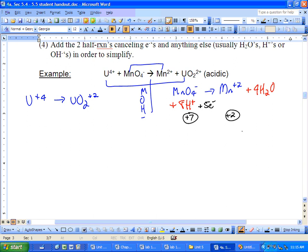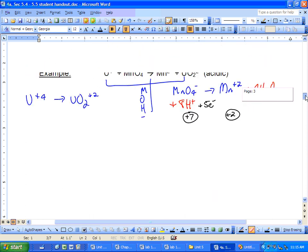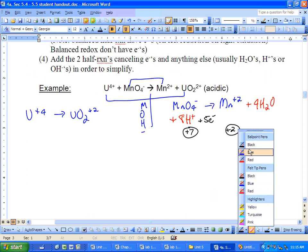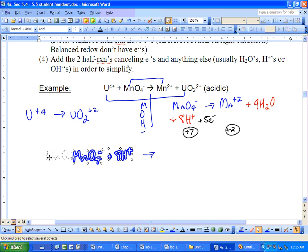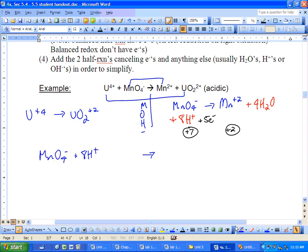So the half reaction is going to be written out nice and neat and centered. You'll see why in a minute here. MnO4-, 8 H+, and of course I didn't leave myself enough space. 5 electrons is going to go to Mn+2 and 4 H2O's.